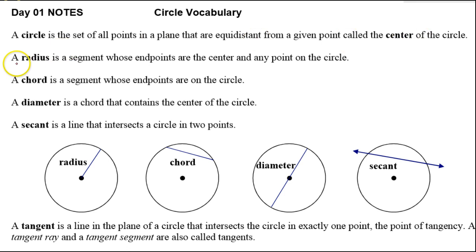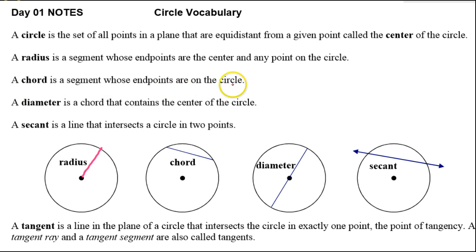A radius is a segment whose endpoints are the center and any point on the circle. For example, this is an example of a radius. A chord is a segment whose endpoints are on the circle. So here's a point on the circle, here's another point on the circle, so a segment like this is called a chord.